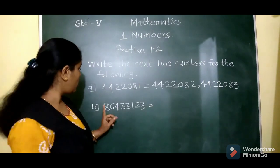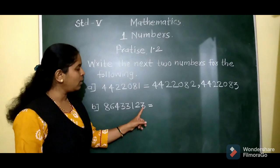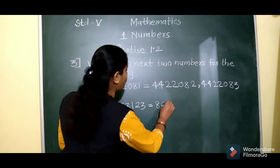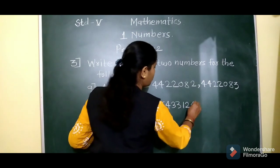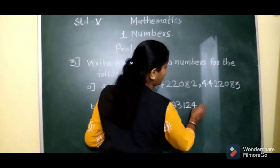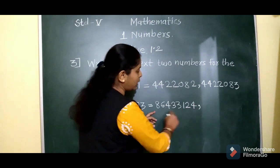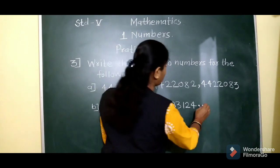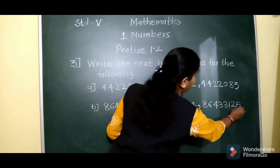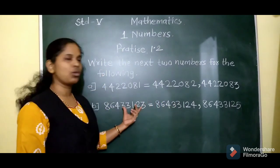Second example for Question 3: find the next 2 numbers of 8643123. Add 1 at the 1's place: 3 plus 1 is 4, so the first successor is 8643124. Then in that number, add 1 again: 4 plus 1 is 5, so the second successor is 8643125. These are the 2 successor numbers of the given number.